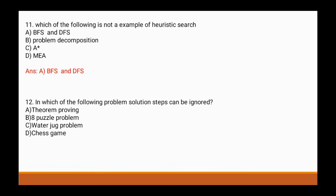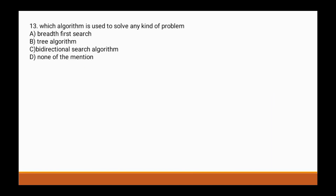Question 12: In which of the following problems can solution steps be ignored? Options are: a) theorem proving, b) eight puzzle problem, c) water jug problem, d) chess game. The correct answer is a) theorem proving.